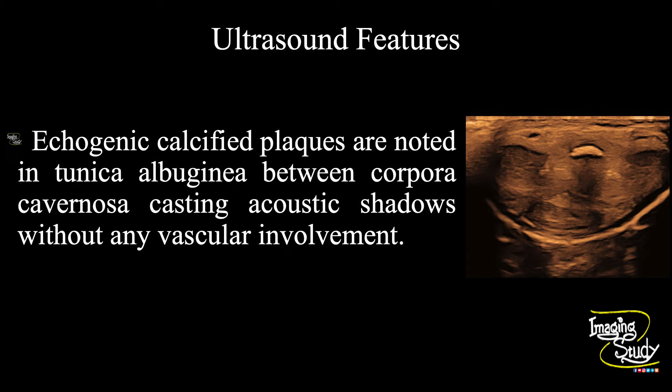In summary, echogenic calcified plaques are noted within the tunica albuginea between the two corpora cavernosa, casting acoustic shadows without any vascular involvement. These features conclude it as a case of Peyronie disease.